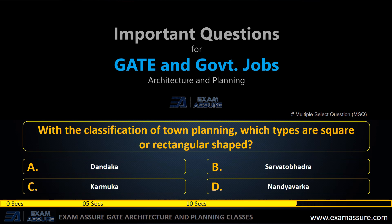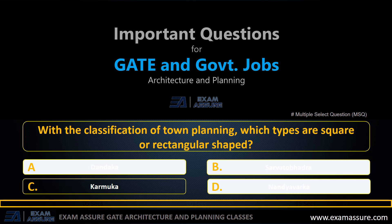Next question: with the classification of town planning, which types are square or rectangular shaped — A: Dandaka, B: Sarvabhadra, C: Karmukha, D: Nadiavarta. The correct answer is A, B, and D.